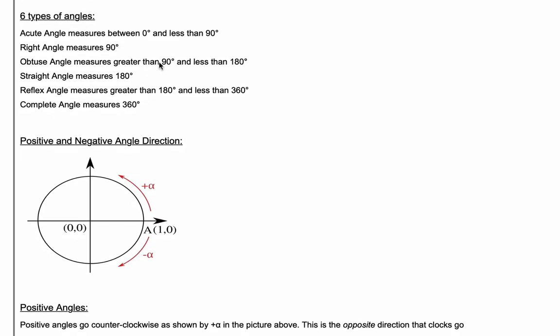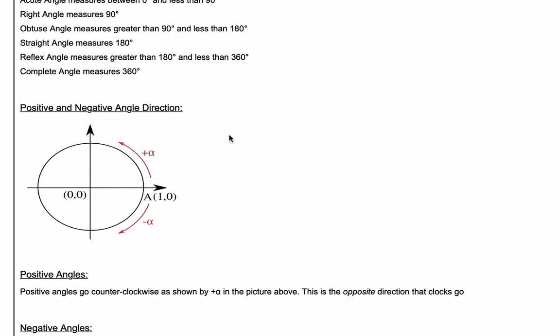Acute angles, which are between zero degrees and less than 90 degrees. Right angles measure exactly 90 degrees, which is what you see here when two lines meet and intersect each other. They're perpendicular, so they form a 90 degree angle.